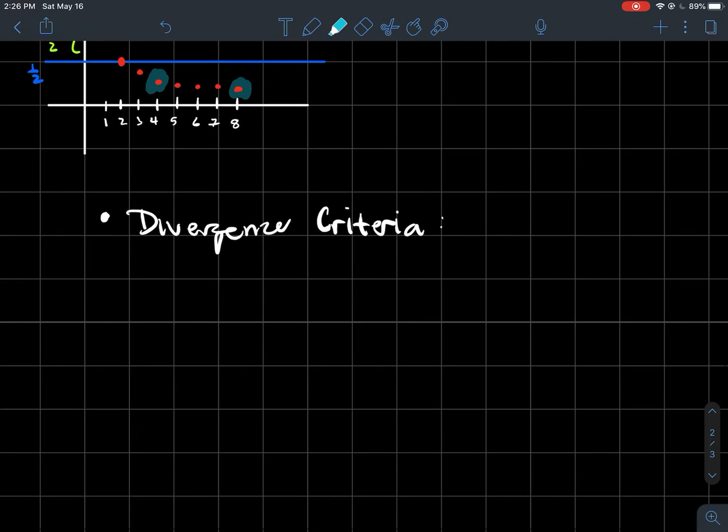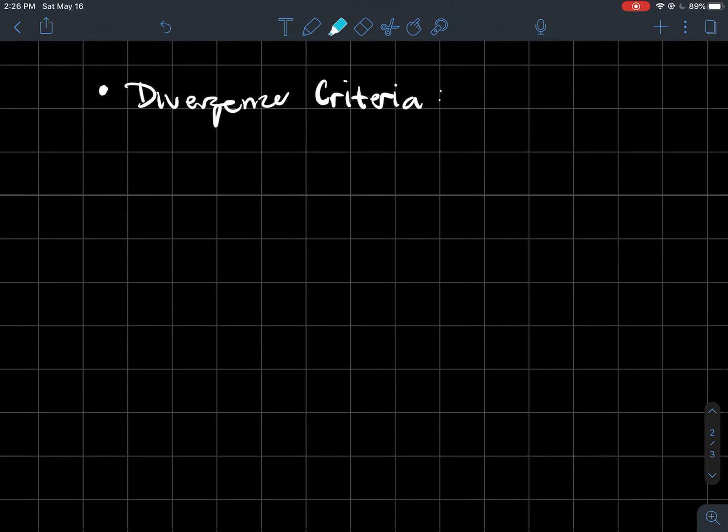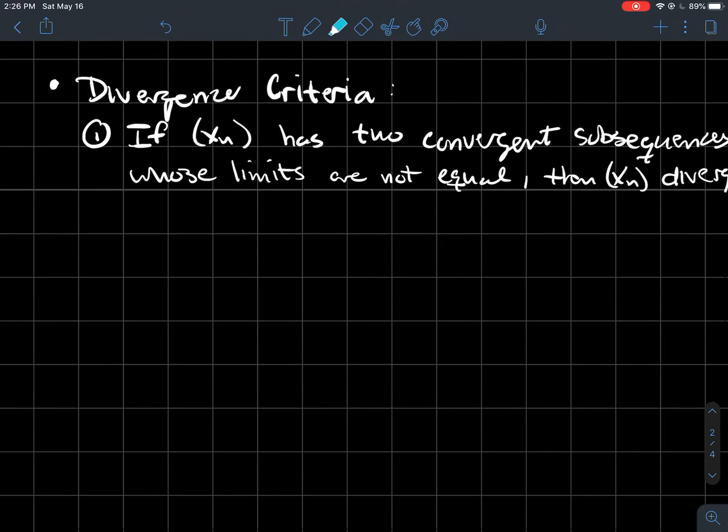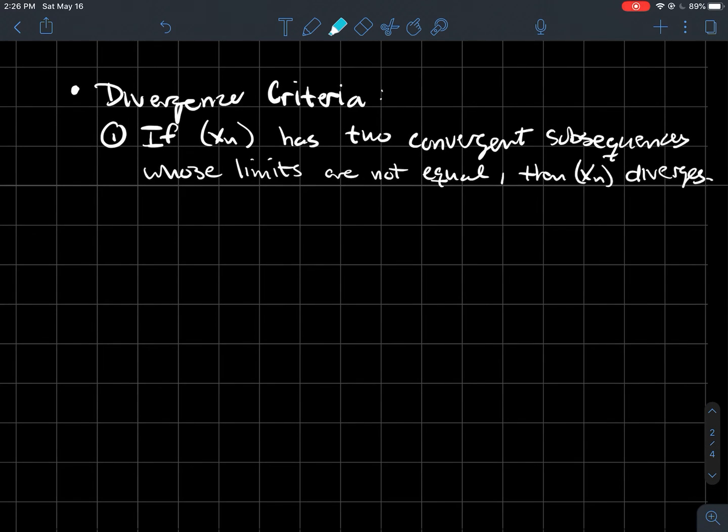So what's another way, so maybe a consequence of those if and only ifs above, the following are equivalent above, is what's called maybe the divergence criteria. So if you've got a sequence that has two convergent subsequences whose limits don't match, then the sequence diverges. And another thing you might look for is if you've got an unbounded sequence, then it's got to diverge also. So those are two things you might look for if you're trying to determine whether a sequence converges or diverges.